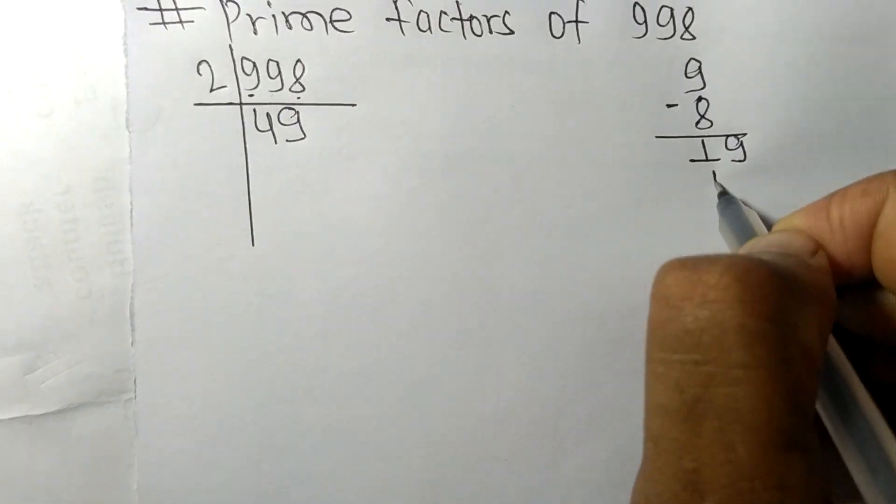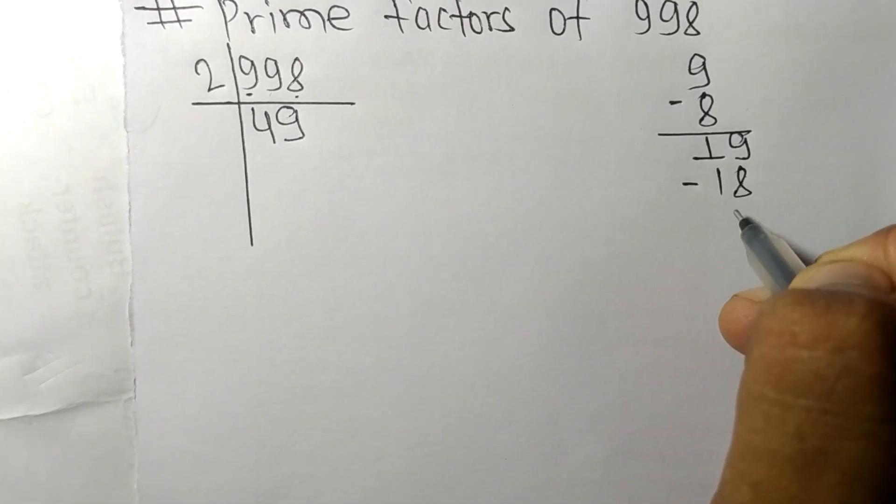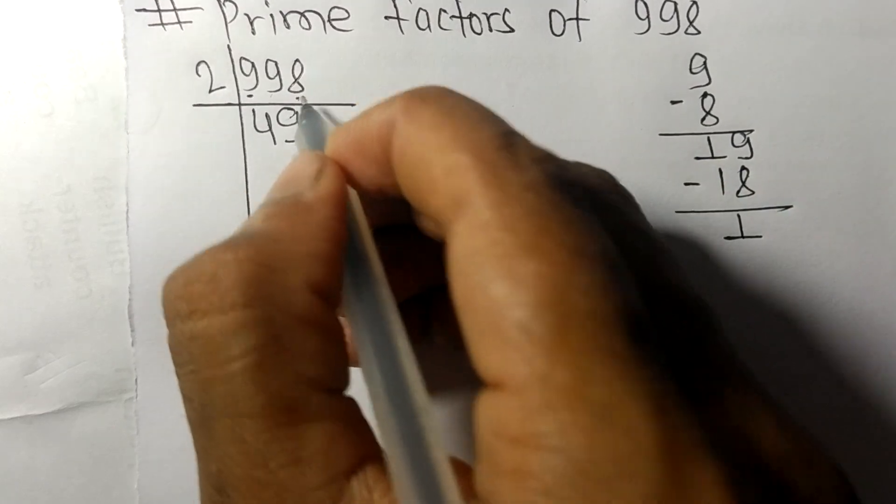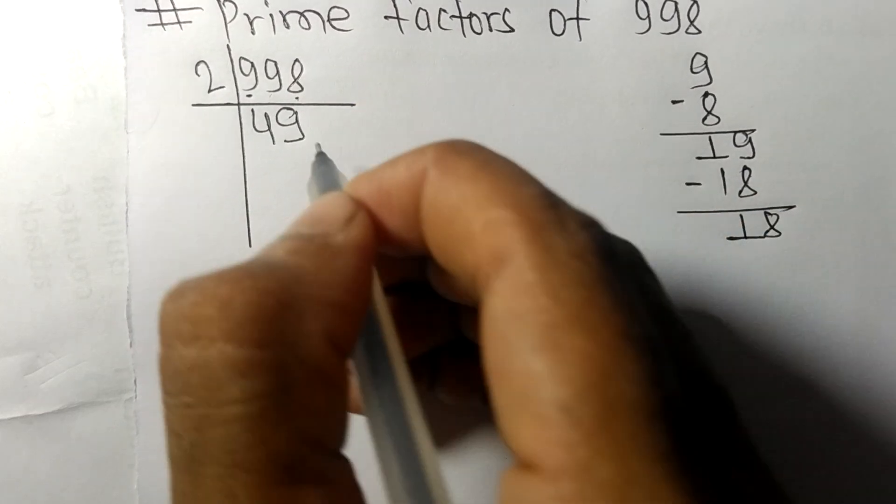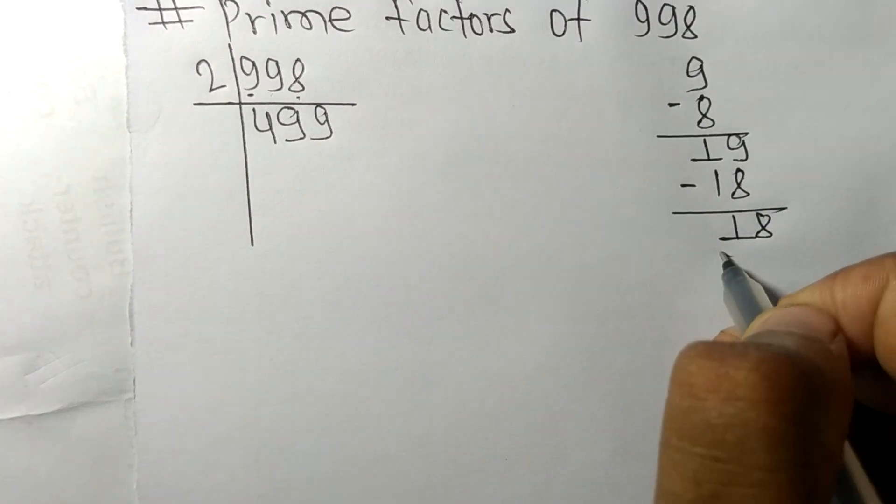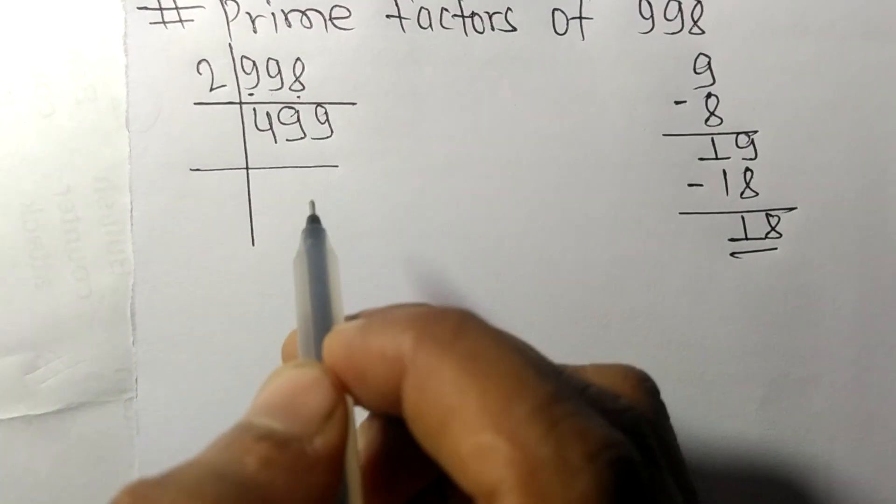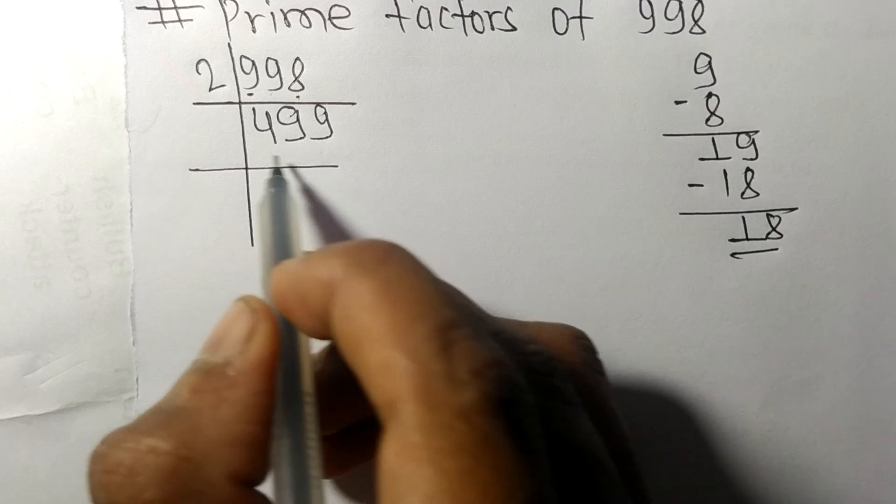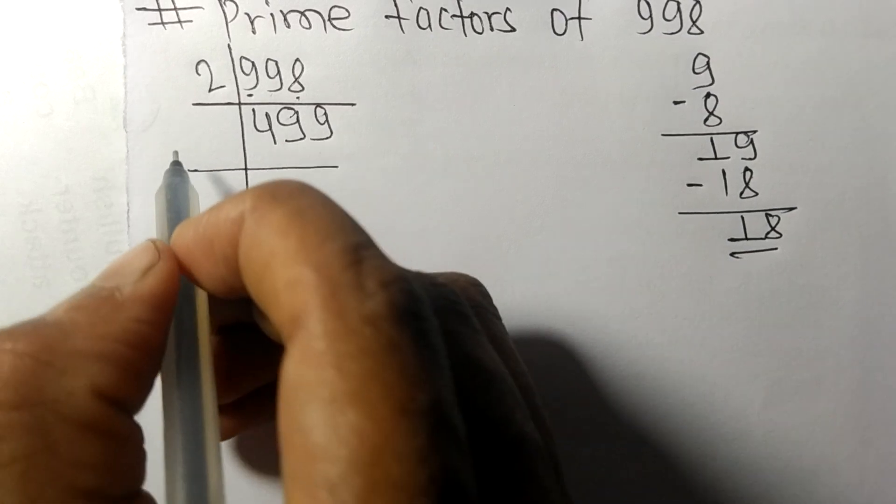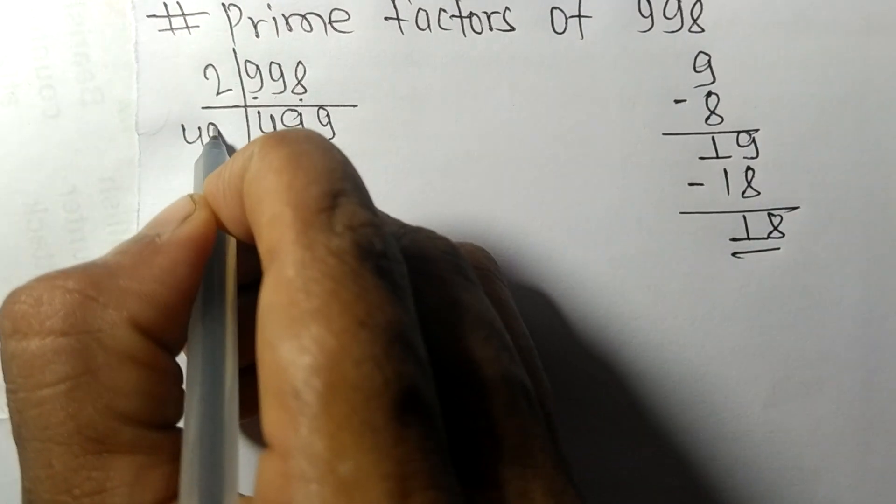On subtracting, we get 1. Bring down the 8 to make 18. Two times 9 is 18. Now we get 499, which is a prime number, so it is exactly divisible by 499 only.